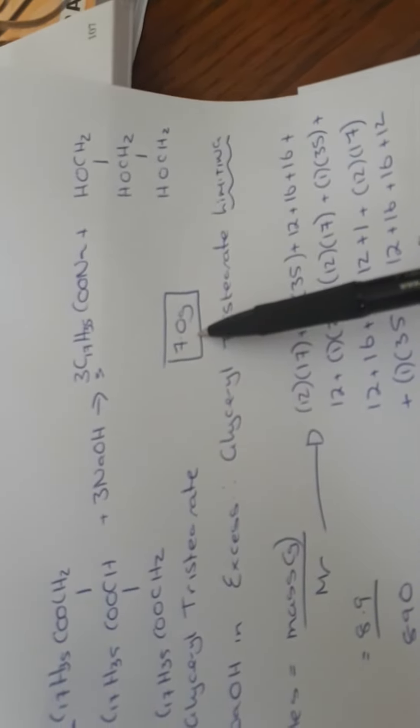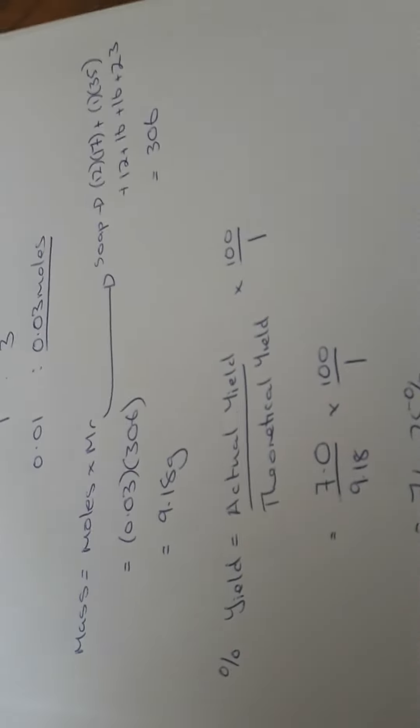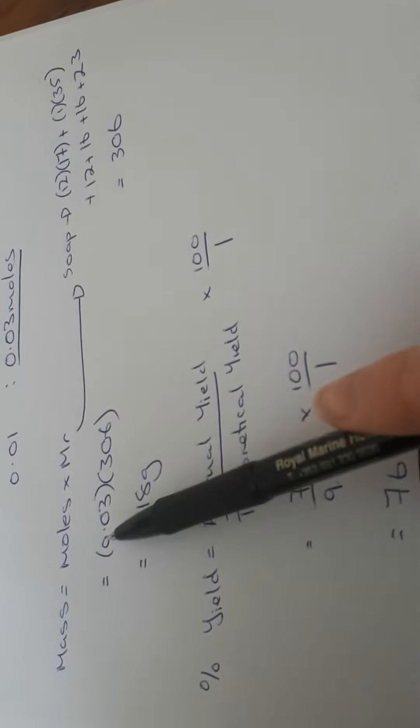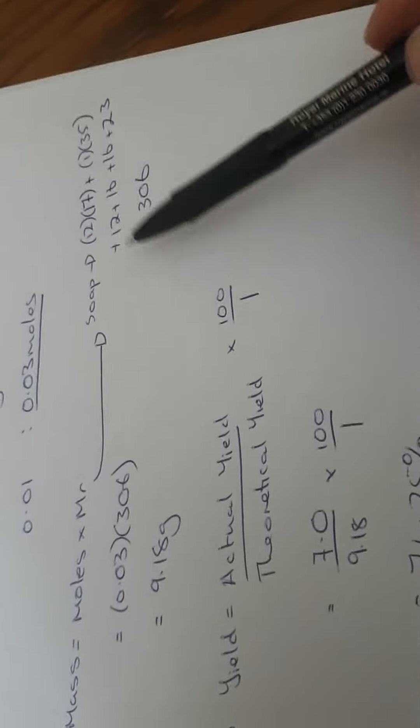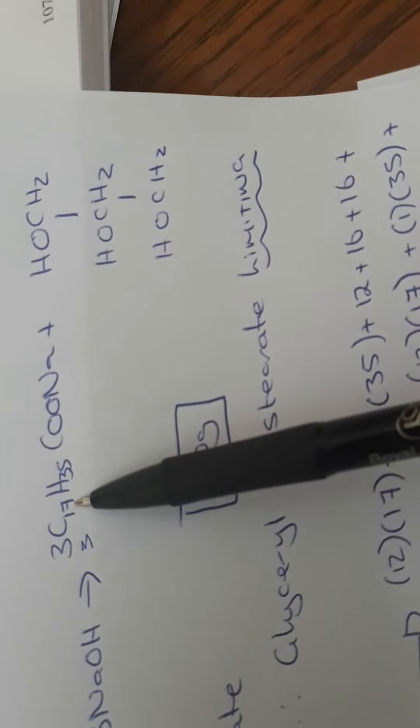That's my actual yield. So I need to find my theoretical yield. So in theory, 0.03 moles is produced and my relative molecular mass of soap is up here.